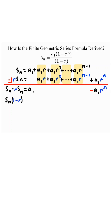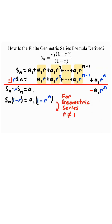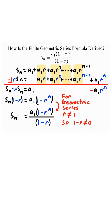On the left side of the equal sign, we'll factor out S of n. On the right side, we'll factor out a sub 1. For a geometric series, the common ratio must not be equal to 1; therefore, 1 minus r is not equal to 0. Meaning, if we divide both sides by 1 minus r, we're okay because we're not dividing by 0. So we divide both sides by 1 minus r, and we get S of n equals a sub 1 times (1 minus r to the power of n) divided by (1 minus r).